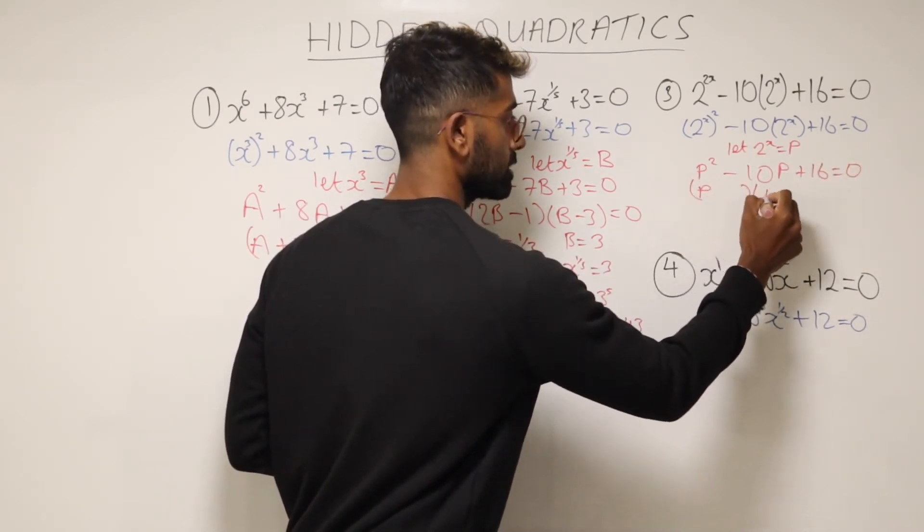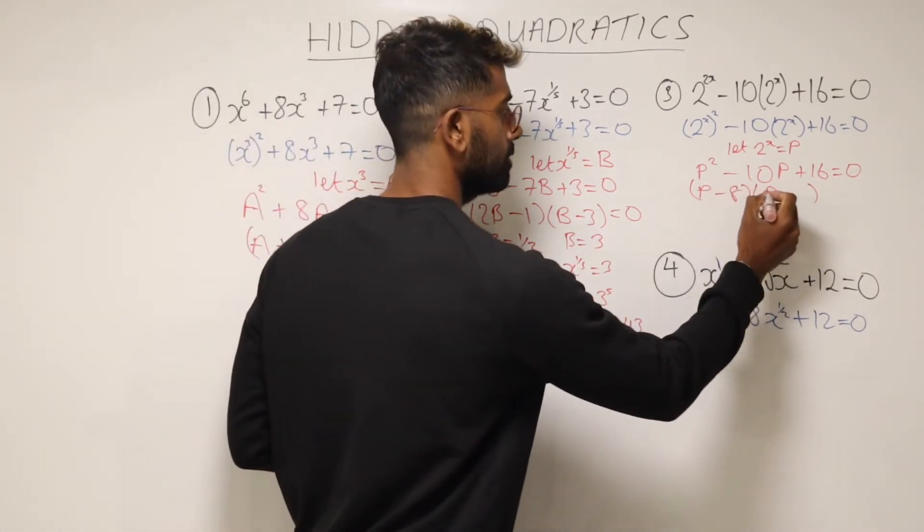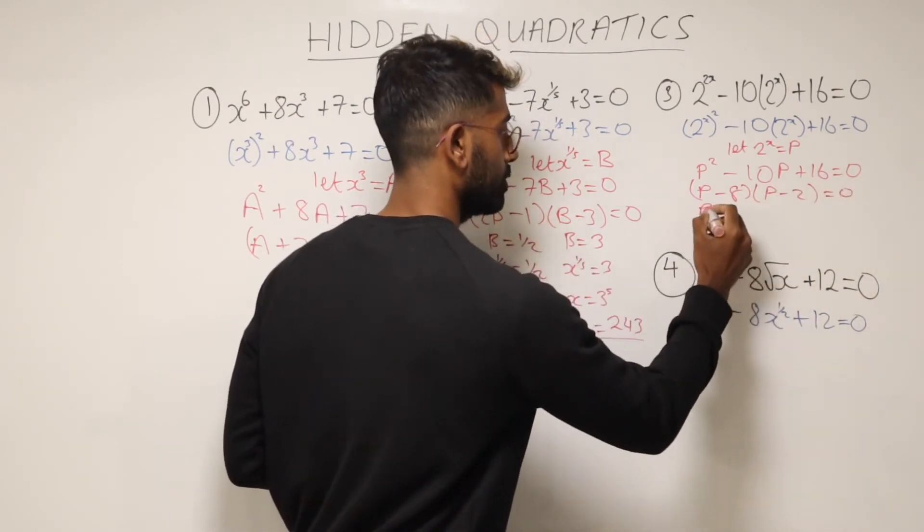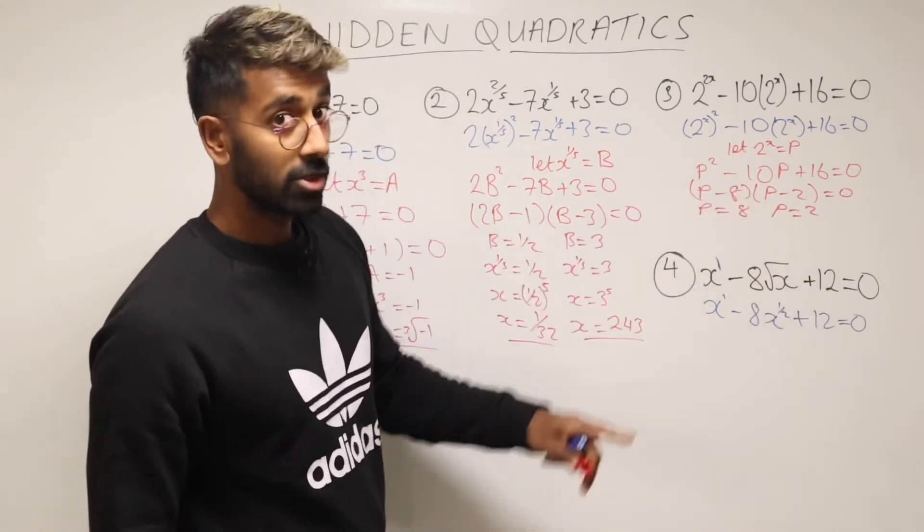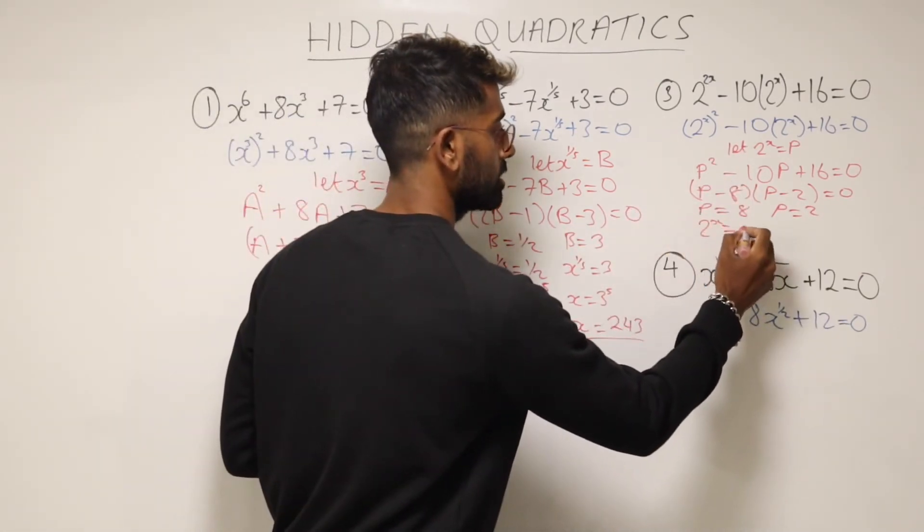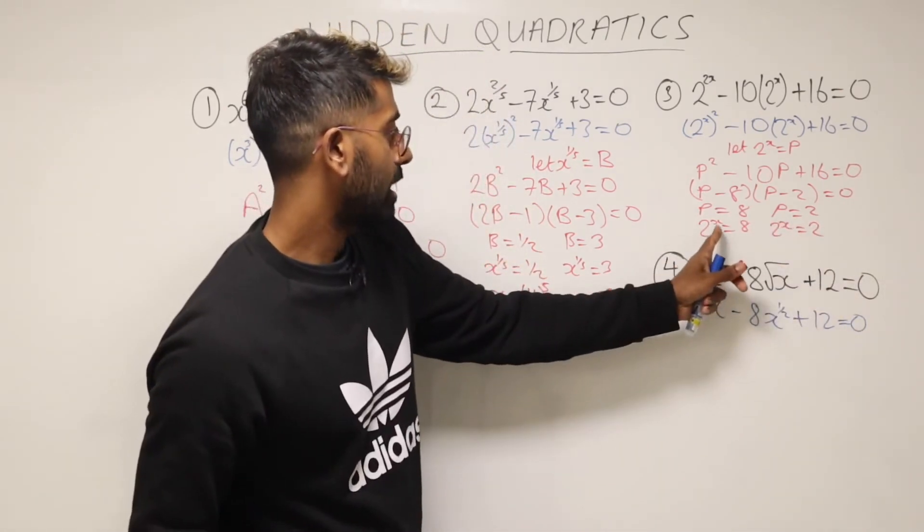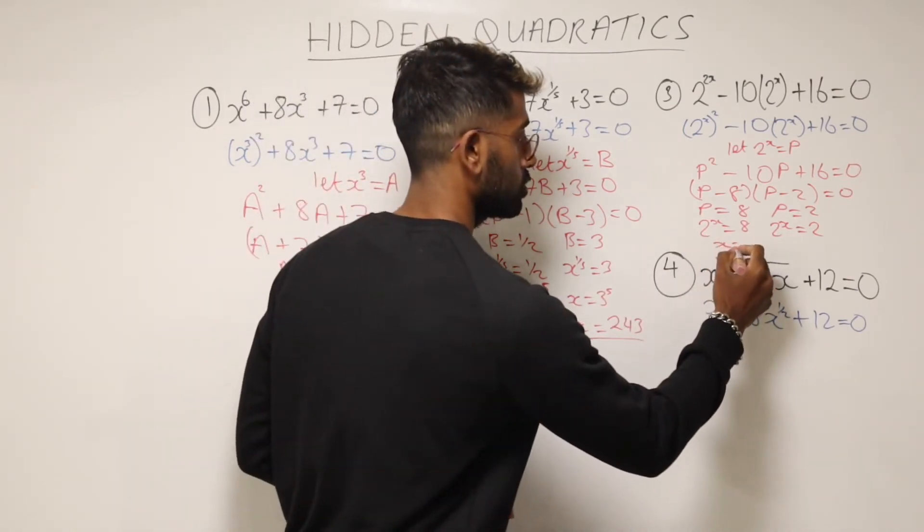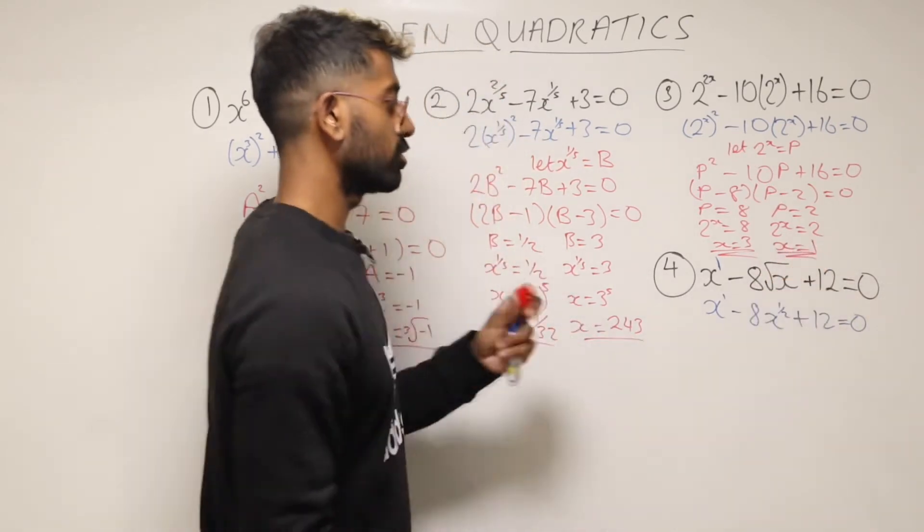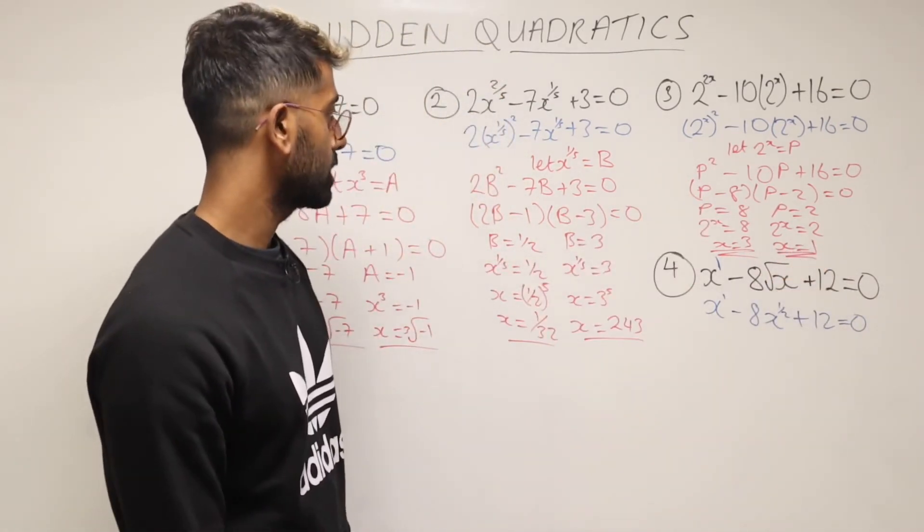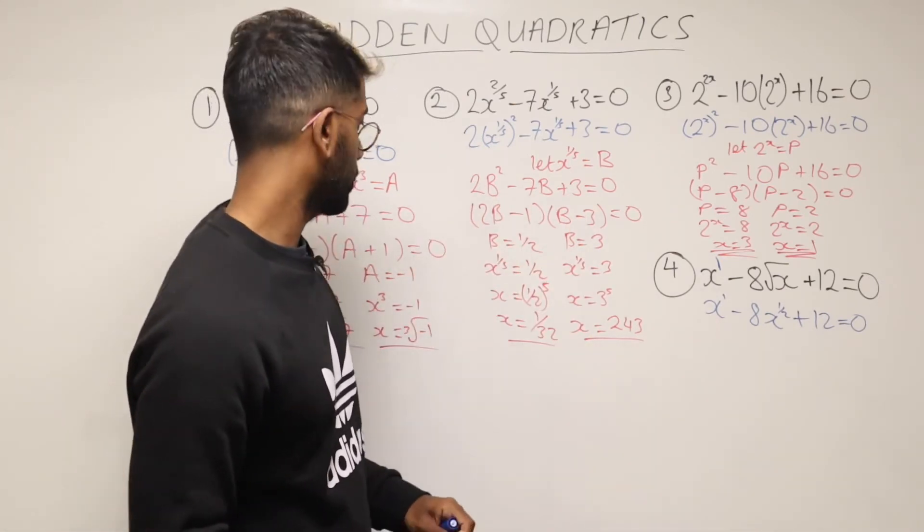So we'll say that's P squared minus 10P plus 16 equals 0. And then look to factorize again. So we'll have, I think minus 8 and minus 2 this time, equals 0. So P is 8 and P is 2. And then remember that means 2 to the x is equal to 8 and 2 to the x is equal to 2. So 2 to the power of something is 8. Well, that's 3. 2 to the power of something is 2. Well, 2 to the power of 1 has got to be 2. Okay, so there we go. Those are the first three done. Just one more to go with over here.